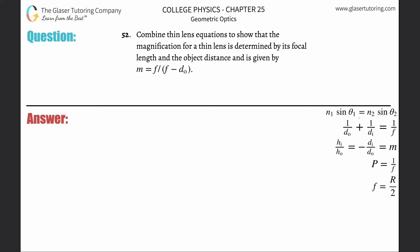Number 52, combine thin lens equations to show that the magnification for a thin lens is determined by its focal length and the object distance given by this thing.